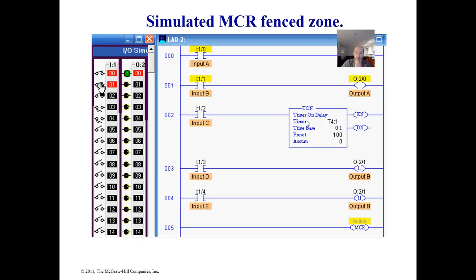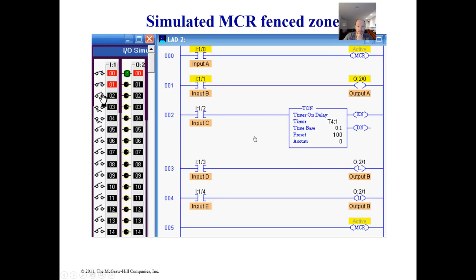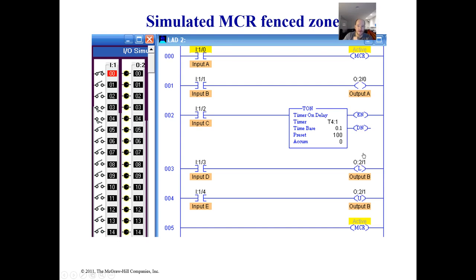Here's an example with a timer. The MCR is on, my output is on, and my timer is going. It's not retentive, which is fine. When the timer goes done, there it is. But if I come back and deactivate this input, it resets itself. That's the difference between a retentive and non-retentive instruction within the MCR fenced zone.